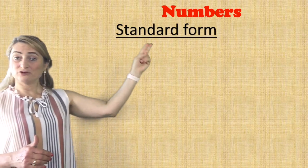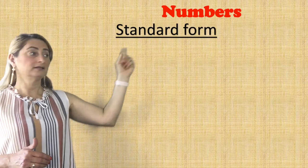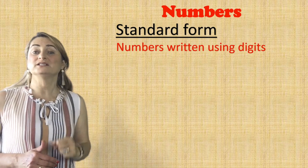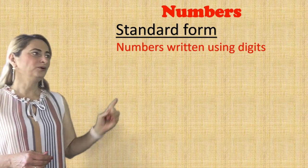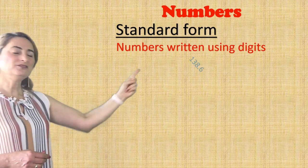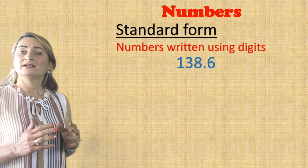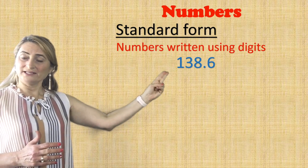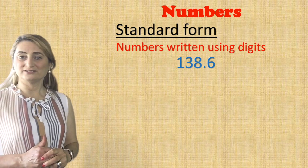For example, standard form. We all know what standard form is, which is writing numbers using digits. As an example, 138.6 — when you write them with the digits like this, it's called the standard form.